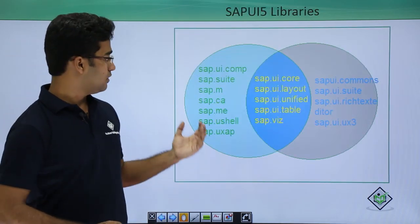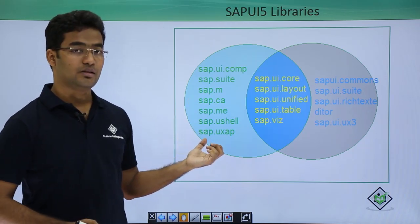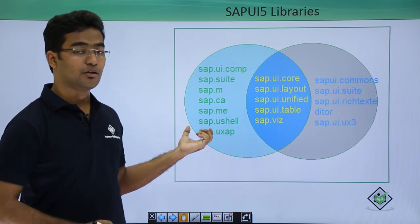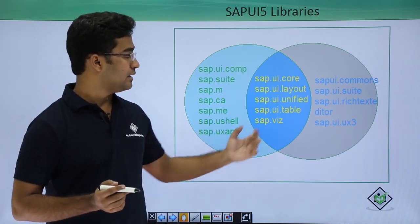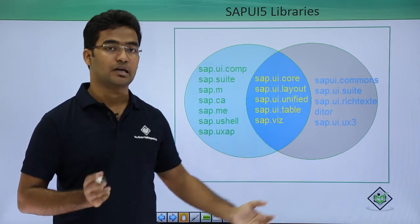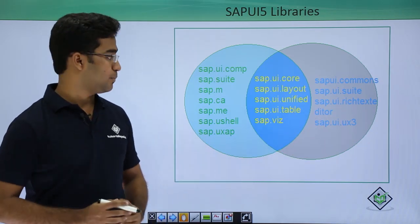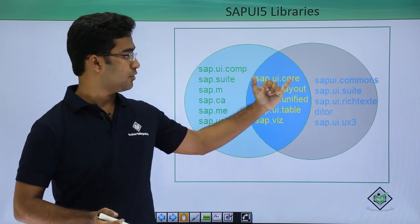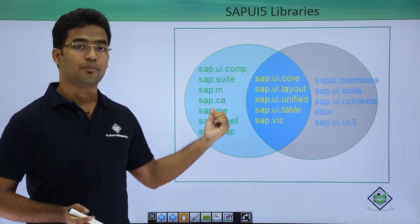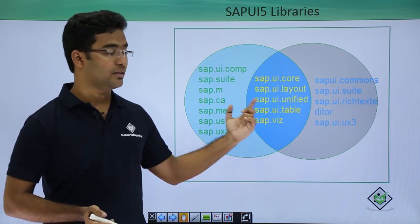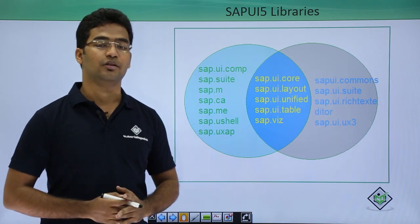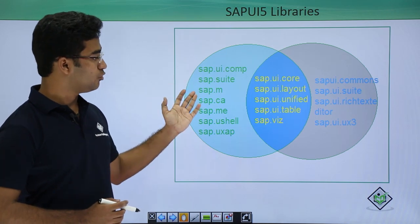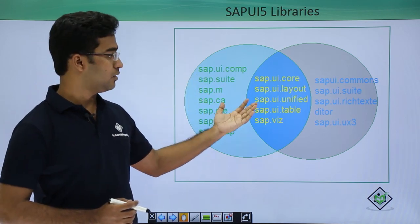These are some of the libraries used in SAPUI5. On the left you could see the libraries that are supported both on desktop and mobile, and on the right side you could see the set of libraries that are only supported on the desktop. For example, sap.m and sap.ui.commons — sap.m is supported in both desktop and mobile, but sap.ui.commons is only supported in the desktop version. These particular libraries could be combined with these particular libraries.